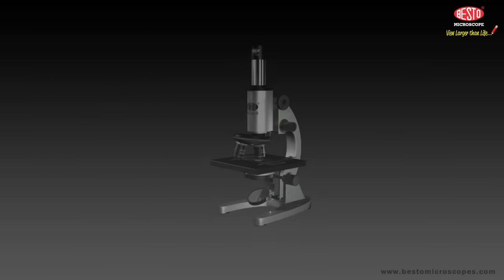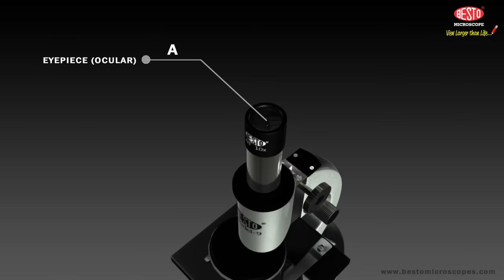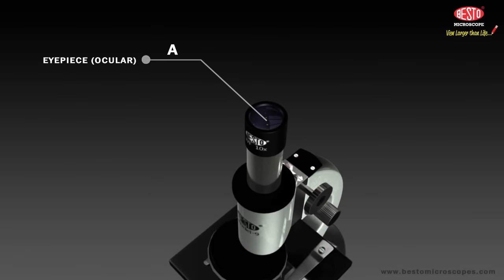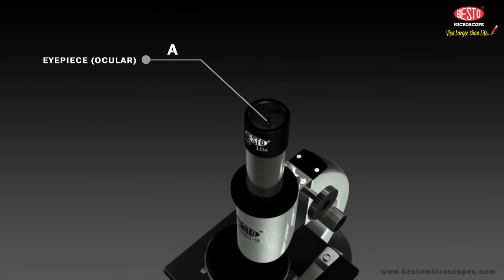A. The eyepiece ocular is the part of the microscope closest to your eyes, through which you look. It contains the ocular lens which makes the image produced by the objective lenses larger.